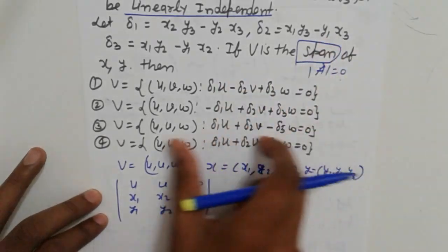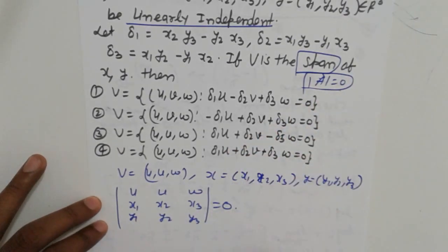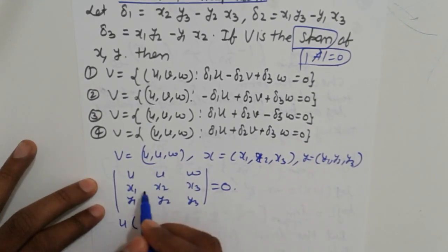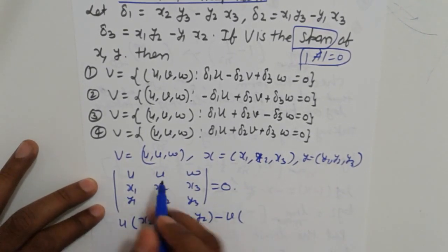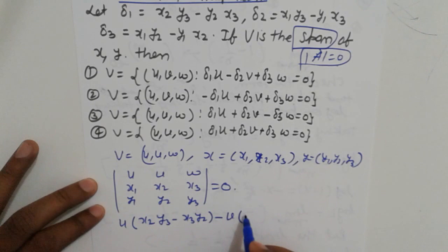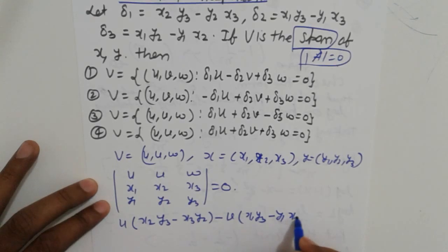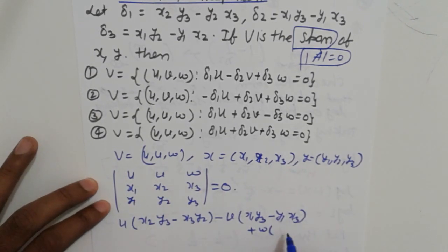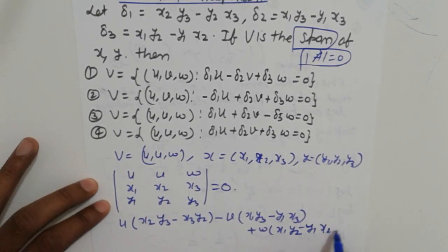Since three vectors are linearly dependent, the determinant equals zero. Expanding the determinant: U times (X2·Y3 − X3·Y2), minus V times (X1·Y3 − Y1·X3), plus W times (X1·Y2 − Y1·X2) equals zero.